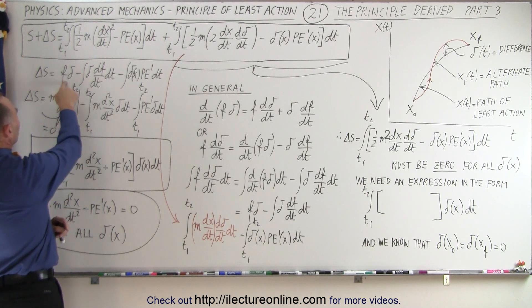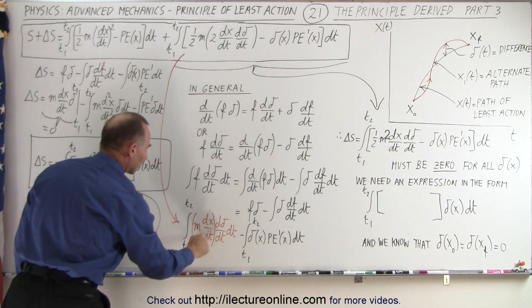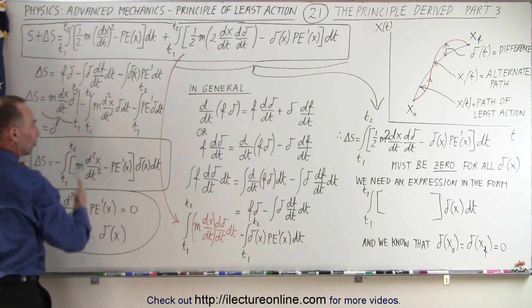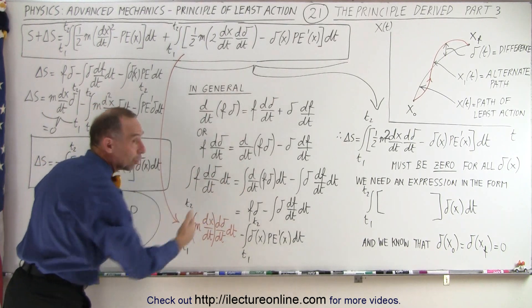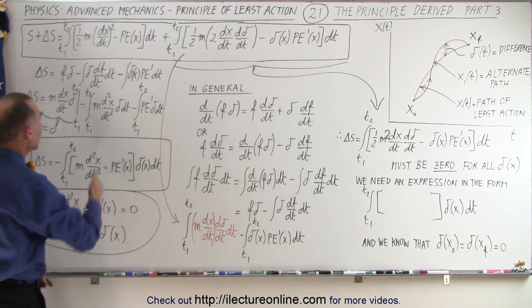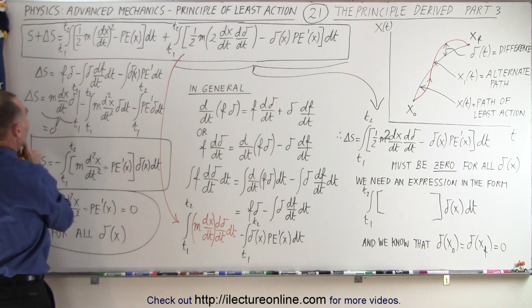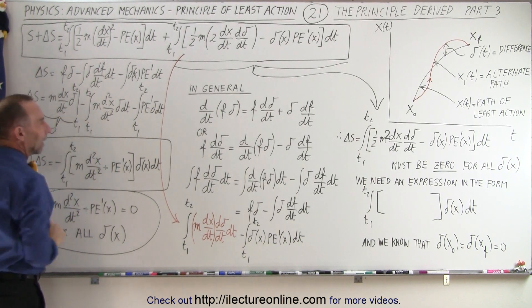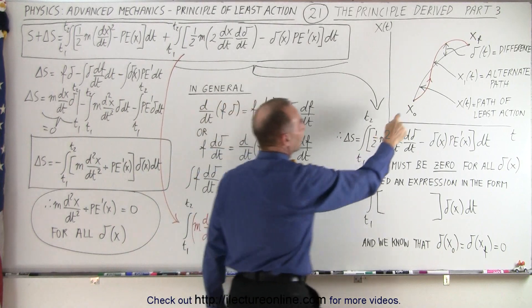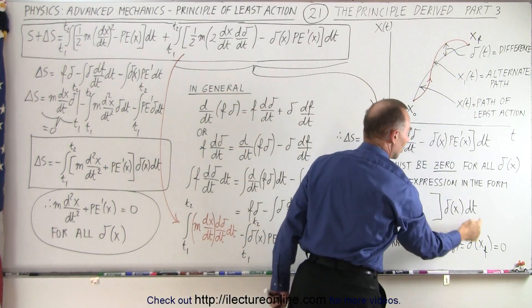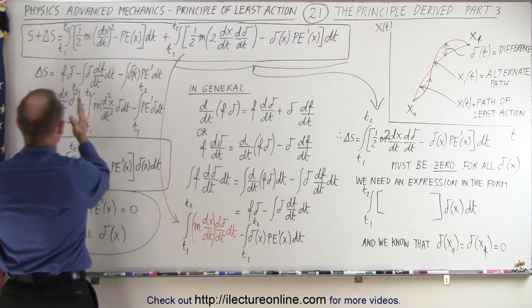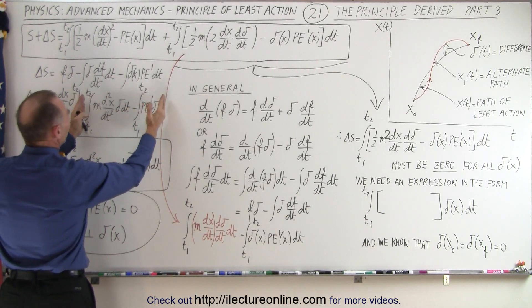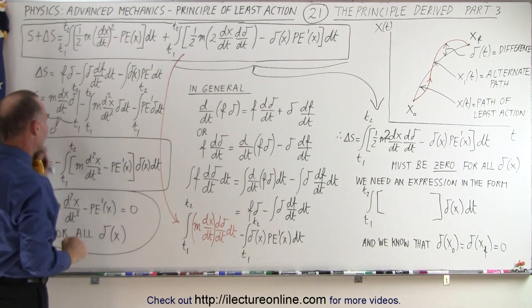The function f is equal to m dx/dt. So replacing f with m dx/dt times delta, and since this comes from integration by parts, we need to evaluate it at the limits. That means evaluating the delta function at the limits — and we know that the delta function at the limits must equal zero, because the two paths meet at the endpoints. Therefore, this boundary term goes to zero, leaving only the two integral portions of delta S.